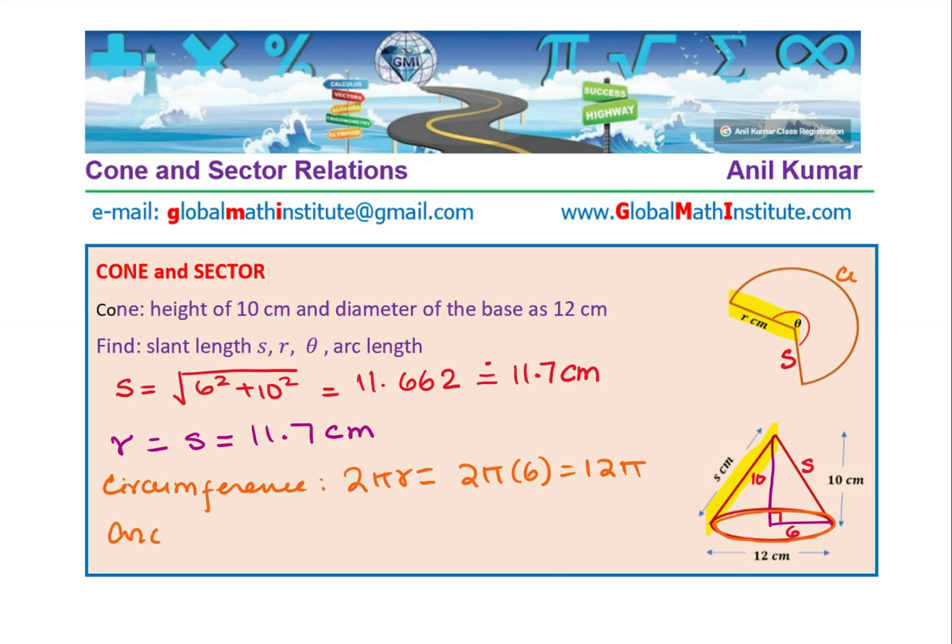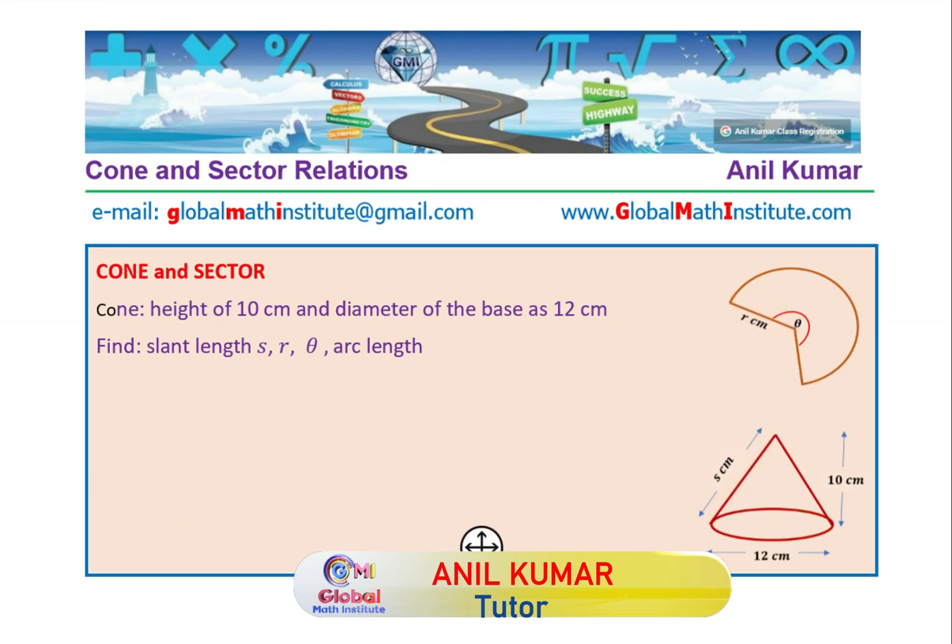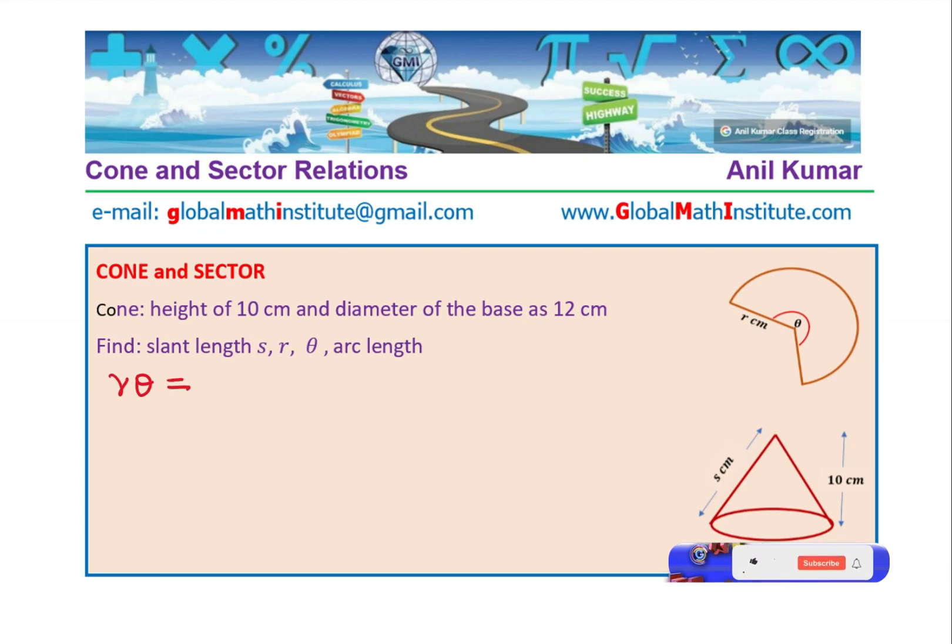Since we know the radius of the sector, we know what is the arc length A of the sector. Arc length A is r theta, and that should be equal to 12 pi. So r we know as 11.7, but since we need to find a very accurate value, we are going to use r as 11.662.